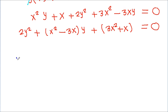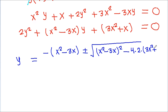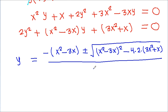We can find the value of y using the quadratic formula: y equals minus b, which is minus of x squared minus 3x, plus or minus the square root of b squared minus 4ac, where that is x squared minus 3x whole squared minus 4 times 2 times 3x squared minus x, divided by 2a which is 4. Since x and y are integers, y can be an integer only if the term under the square root is a perfect square.